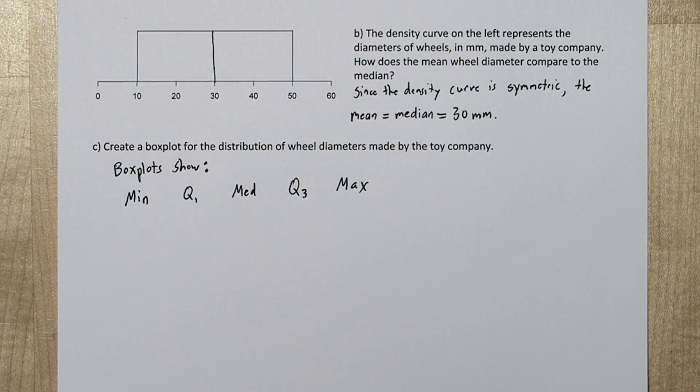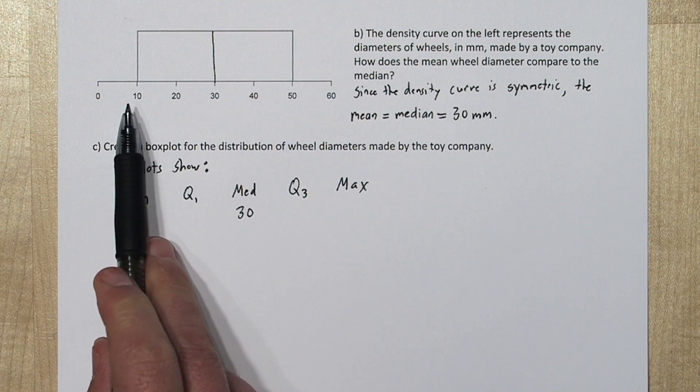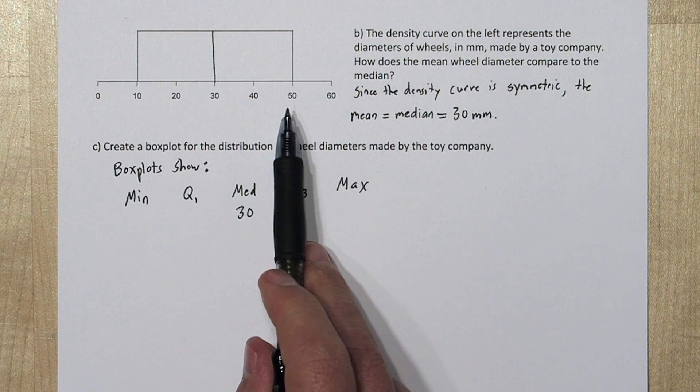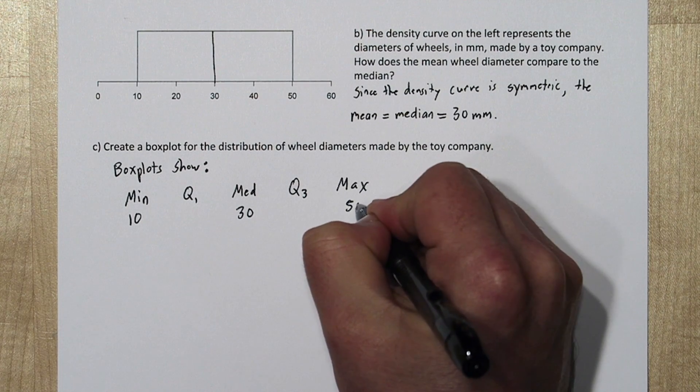Now we just calculated the median, it was 30. And we can see our density curve ends at 10 and ends at 50. There's no area beyond those boundaries. So those are our minimum and maximum values.